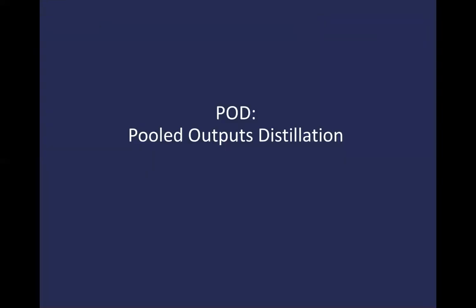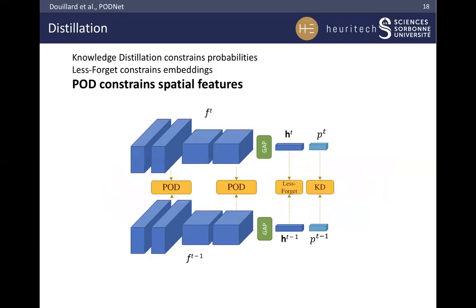Pooled Output Distillation. Naive distillation enforces the probabilities of the new model to be close to the probabilities of the old model. Later, Less Forget showed better results by constraining the flat embedding before the classifier. It maximizes the cosine similarity between both the old and new embeddings. Our loss POD is applied on all over the convnet intermediary outputs. In practice, we use it after each ResNet block.